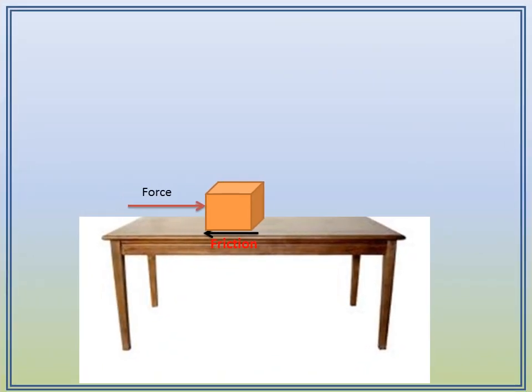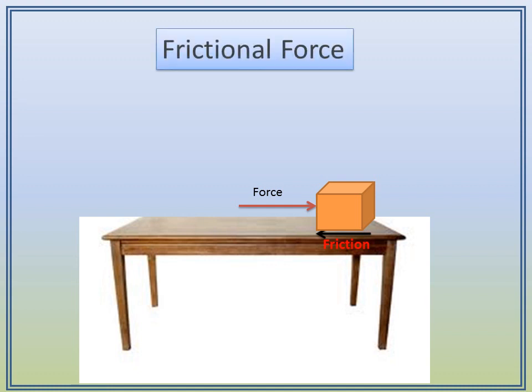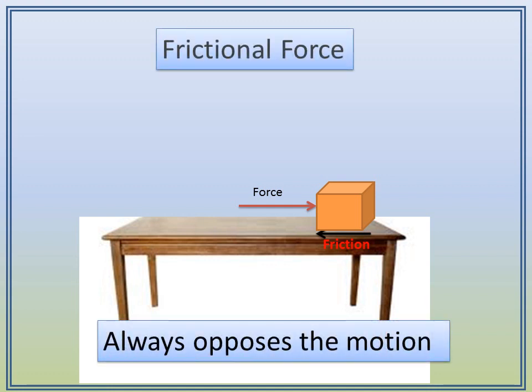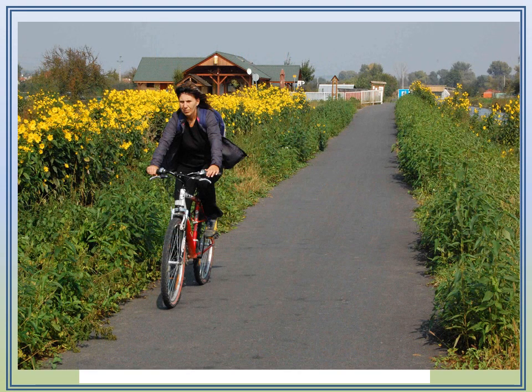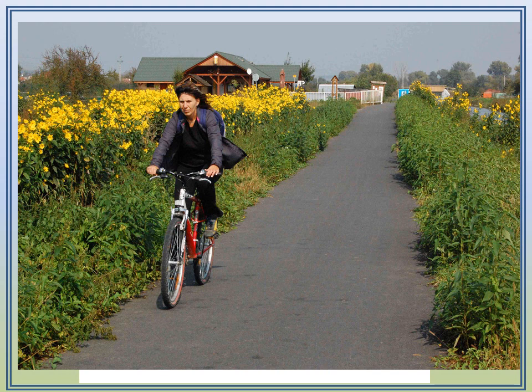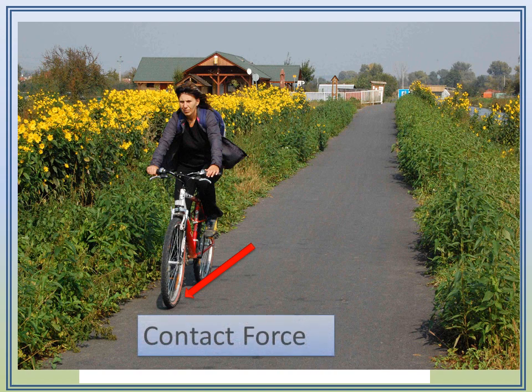When one object moves or tries to move over the surface of another object, the frictional force starts acting on the contact surfaces. It always opposes the motion. There is friction between the tire of the bicycle and the road which finally stops or brings the bicycle to a halt. Since the force of friction arises due to contact between surfaces, it is a contact force.